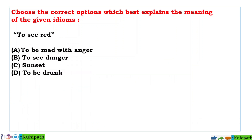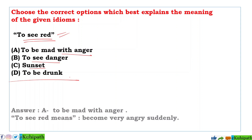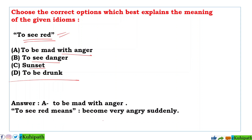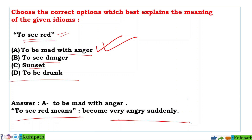Next idiom: 'to see red'. Options: A: to be mad with anger, B: to see danger, C: sunset, D: to be drunk. The correct answer is A — to be mad with anger. 'To see red' means to become very angry all of a sudden, out of nothing.